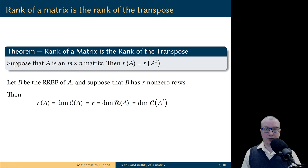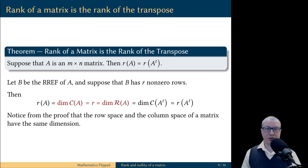and now the dimension of the column space of A transpose is the rank of A transpose. If you look from the beginning to the end, you will see that we have established that rank of A is equal to the rank of A transpose.